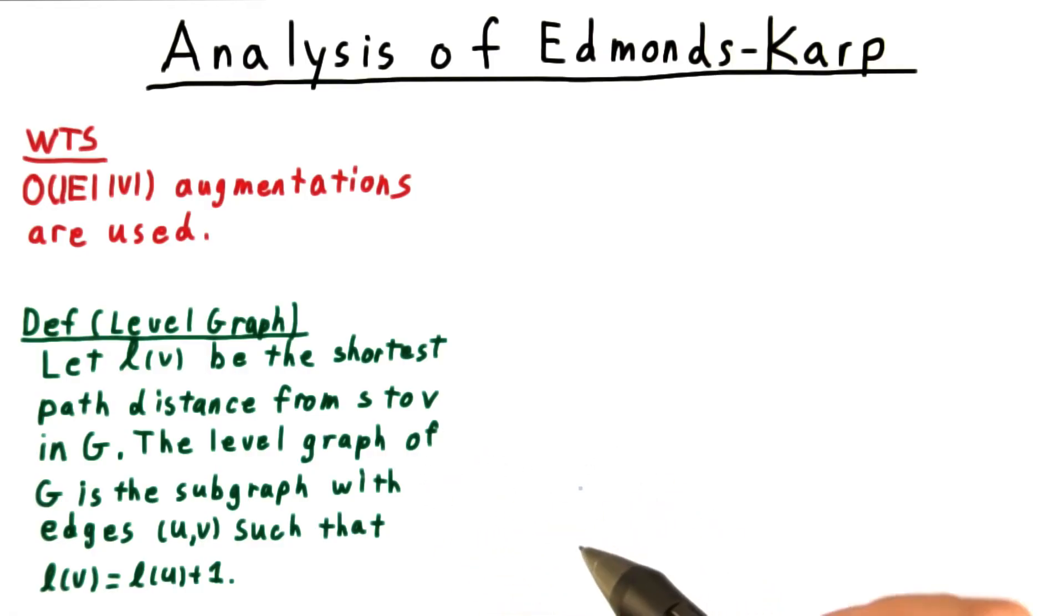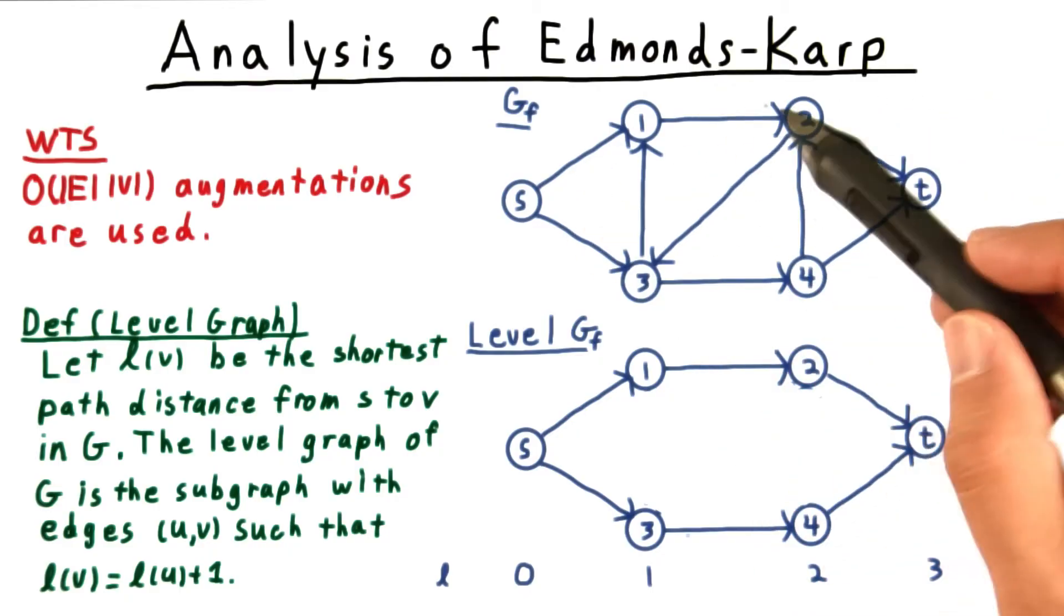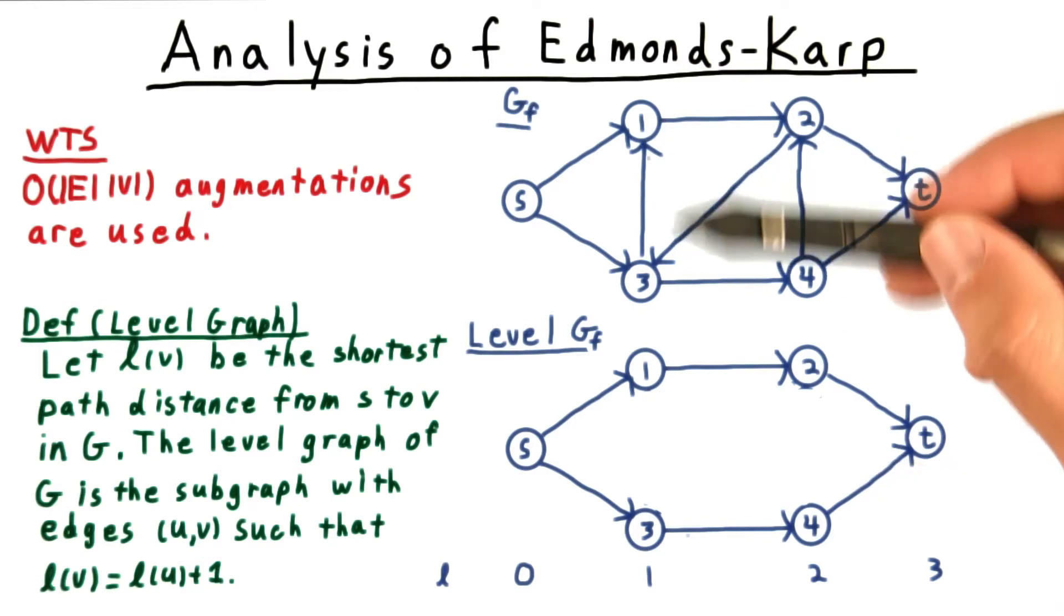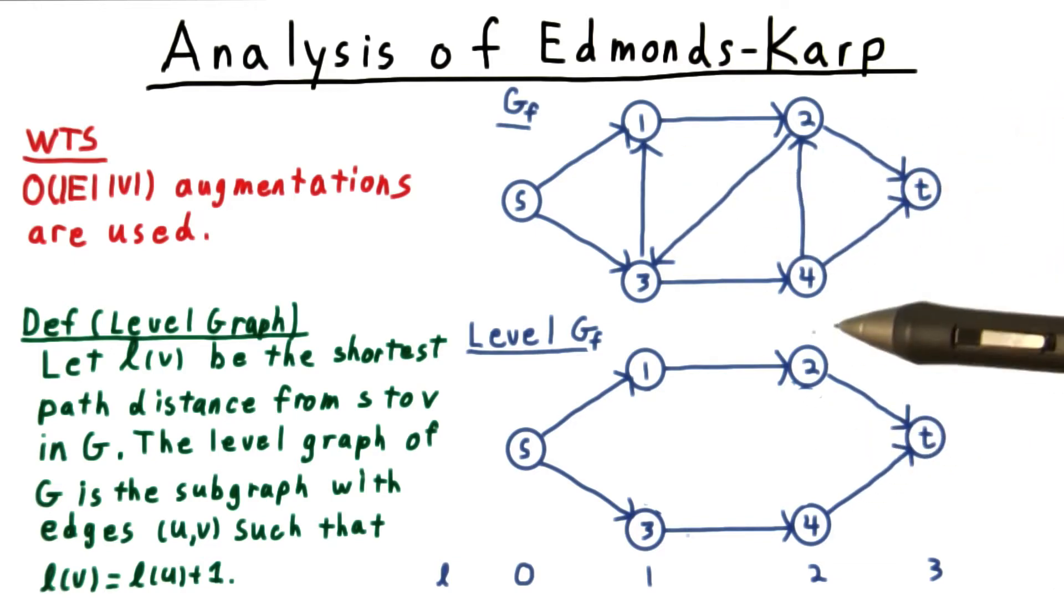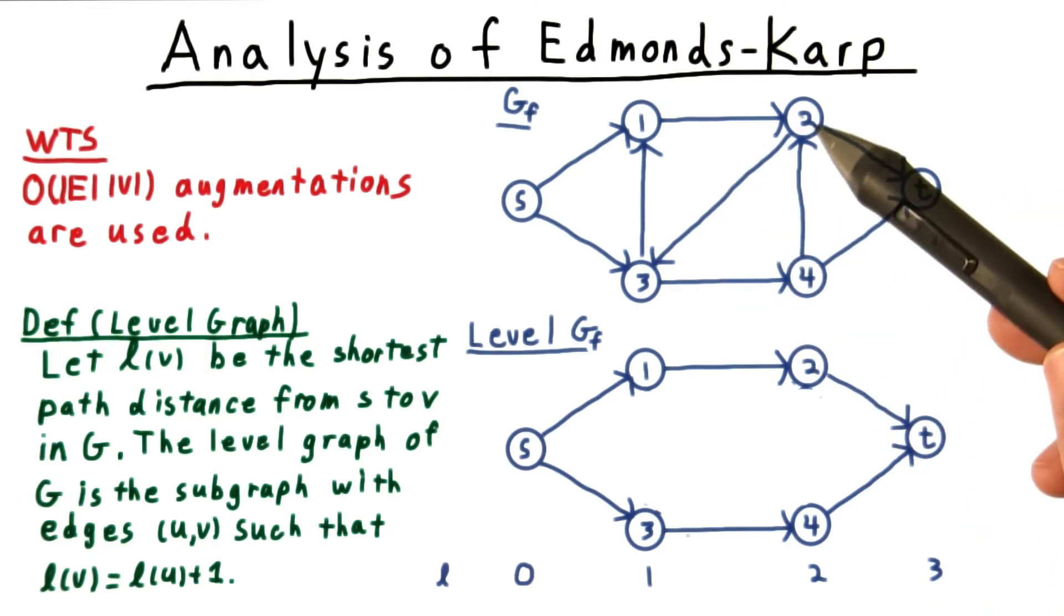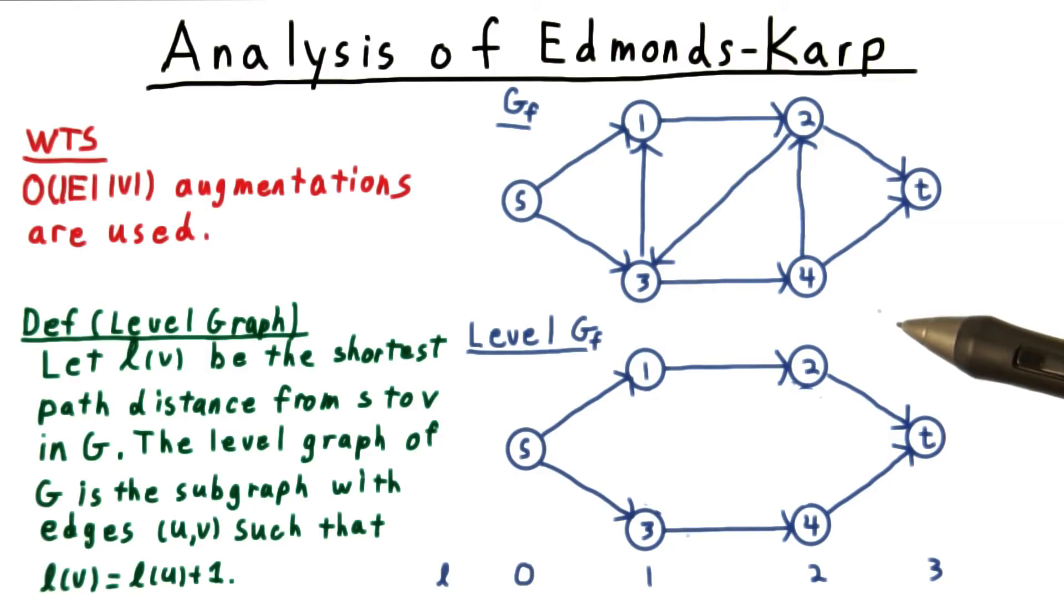For example, if this were my directed graph here, then the level graph would be this subgraph down here. Here, these edges have been deleted because they go between vertices within the same level. And this one has been deleted because it went backwards or up a level in the graph.